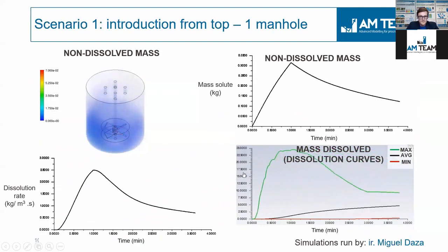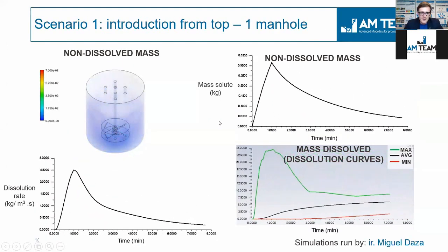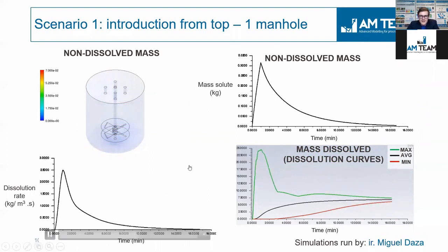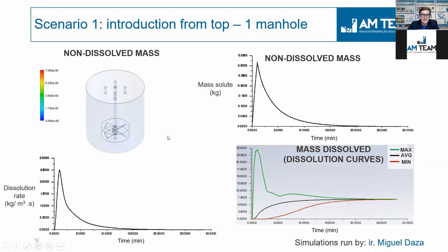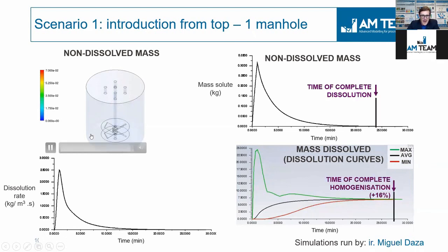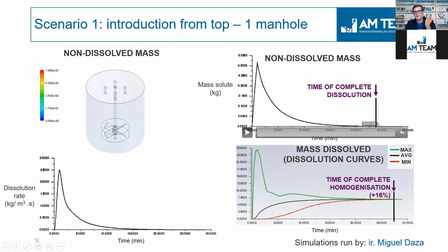Before I explain the slides — there is a lot of information and a lot of things are moving here. At the top, this is the vessel, and what you see is the solute you add — for example, sodium chloride — which starts dissolving and finally disappears. Here you can see the same but in a curve: this is the mass of solutes as a function of time, and of course if it reaches zero you have complete dissolution.